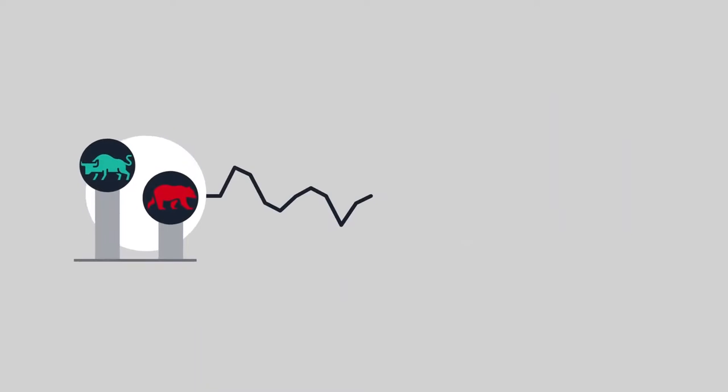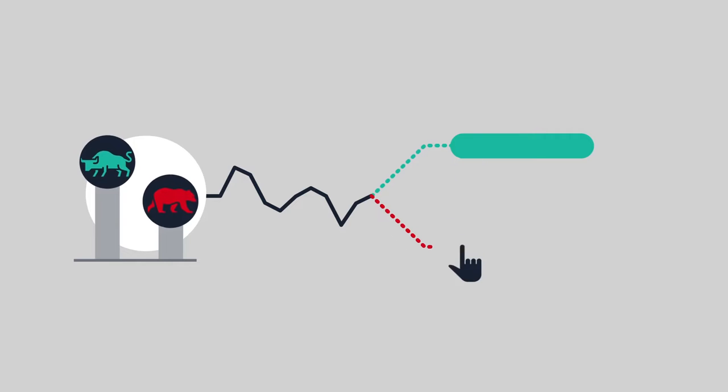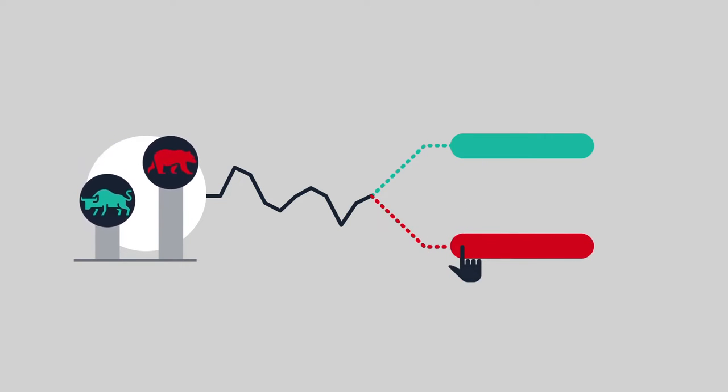If you think a product will go up in value, you can place a buy bet or go long. If you think a product will fall in value, you can place a sell bet or go short.